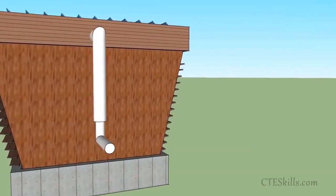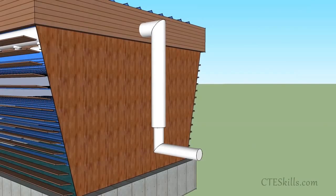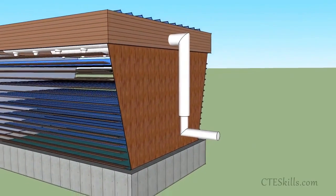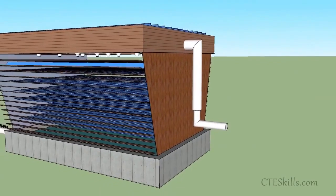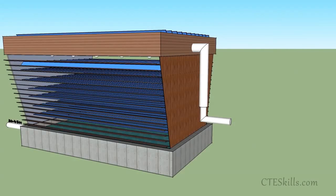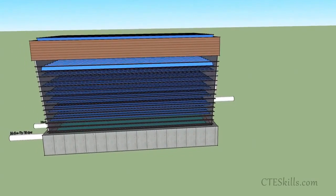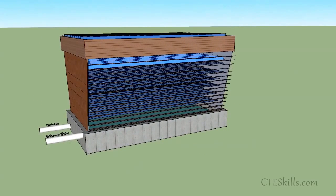Cooling towers are devices used to transfer heat or cool water for reuse. The basic operation is fairly simple. Hot water is pumped in from an outside source and sprayed into the tower. The hot water flows over what is called the fill, which spreads the water over a larger surface to allow for more cooling.